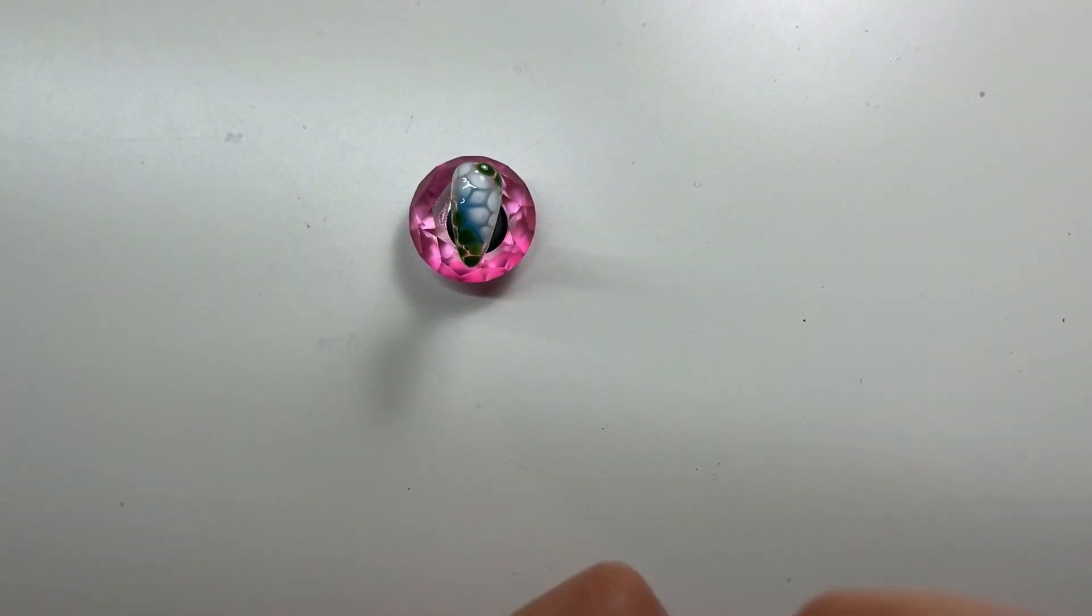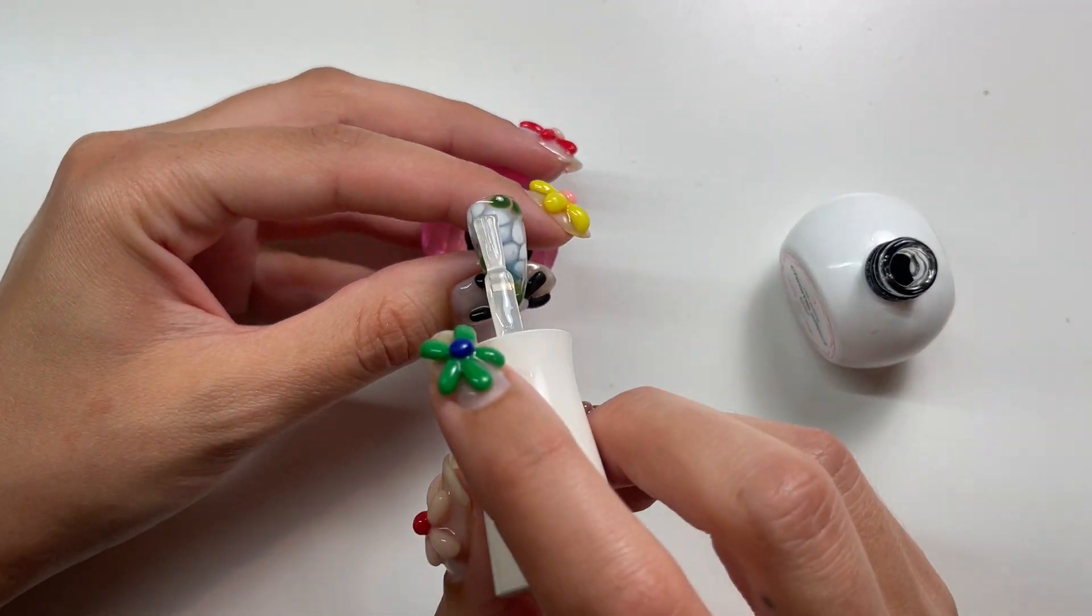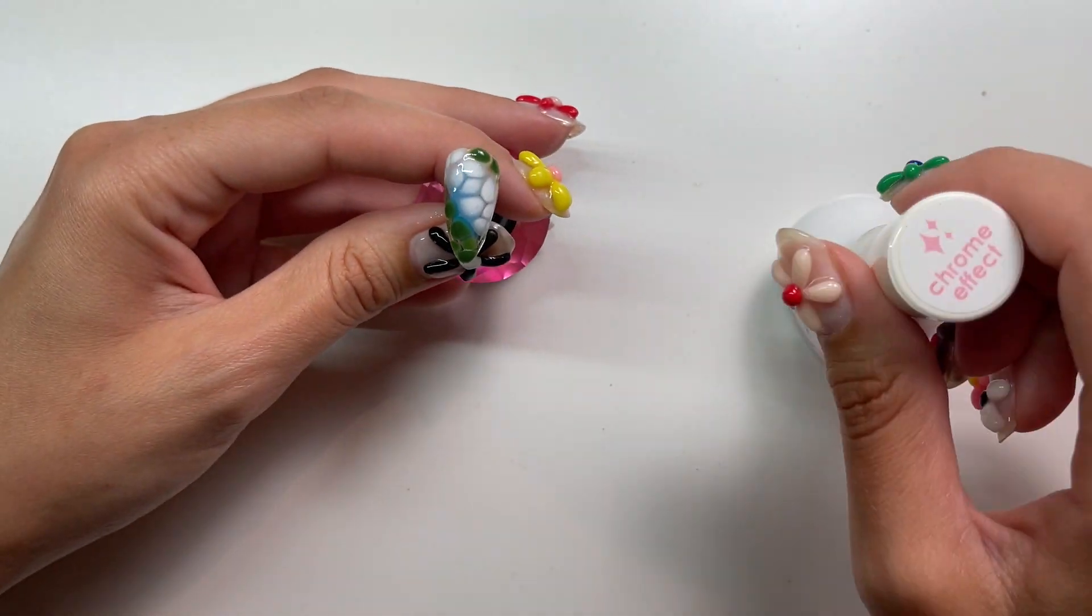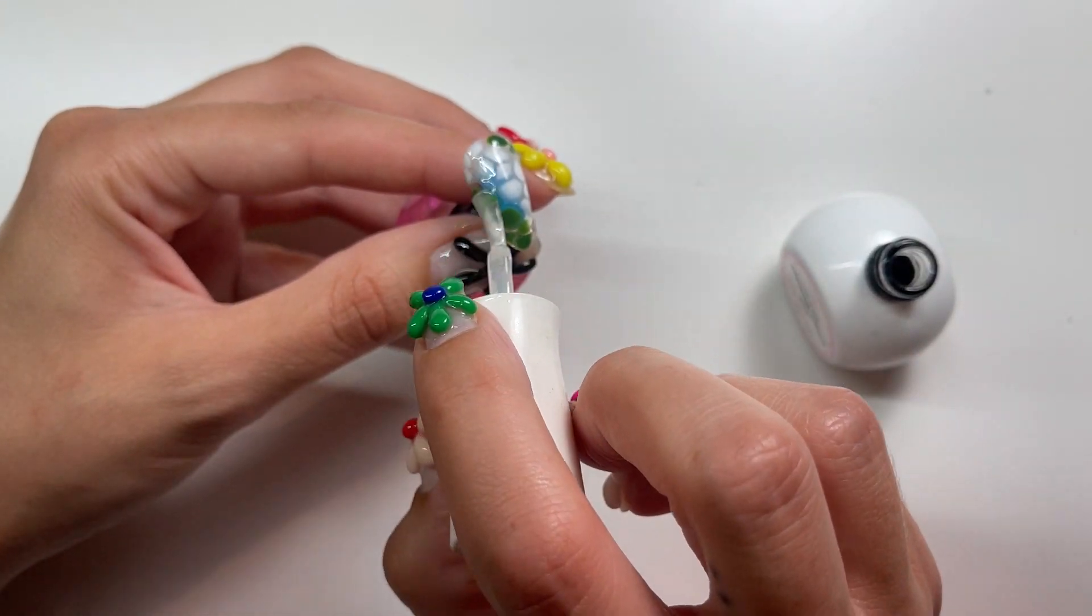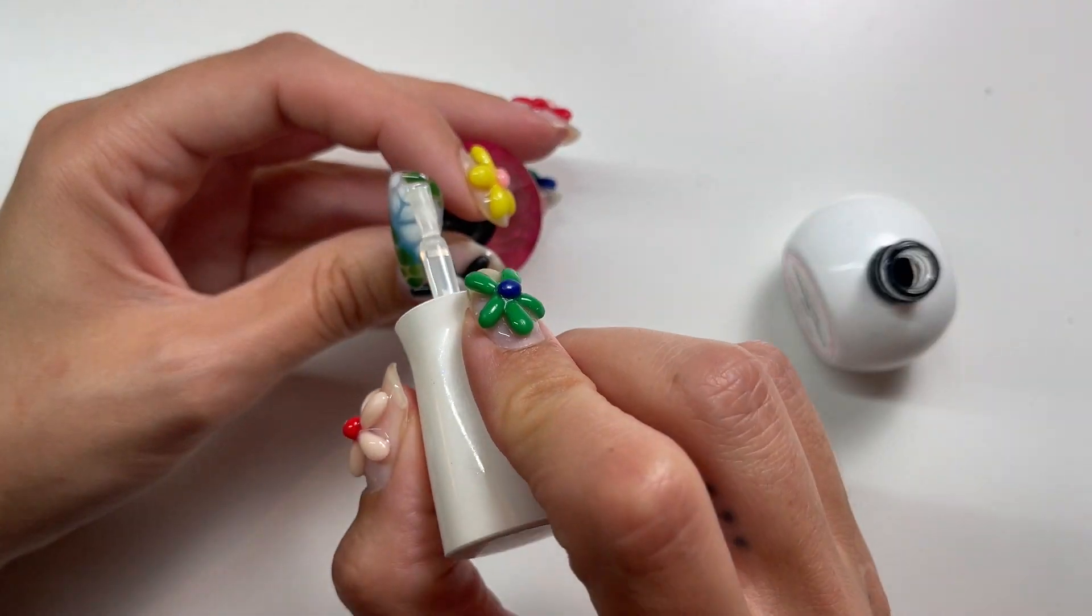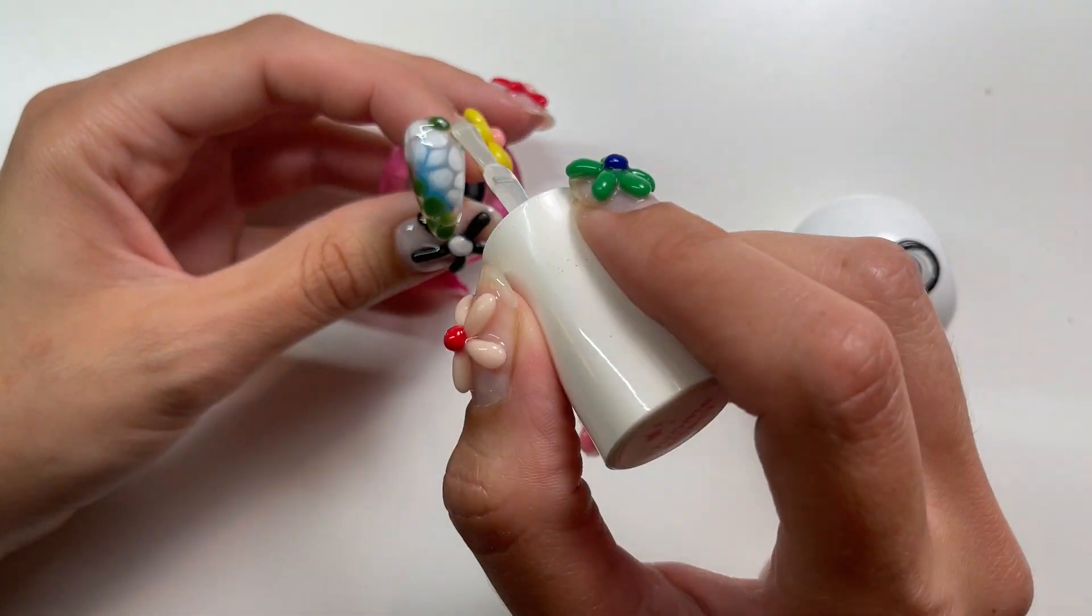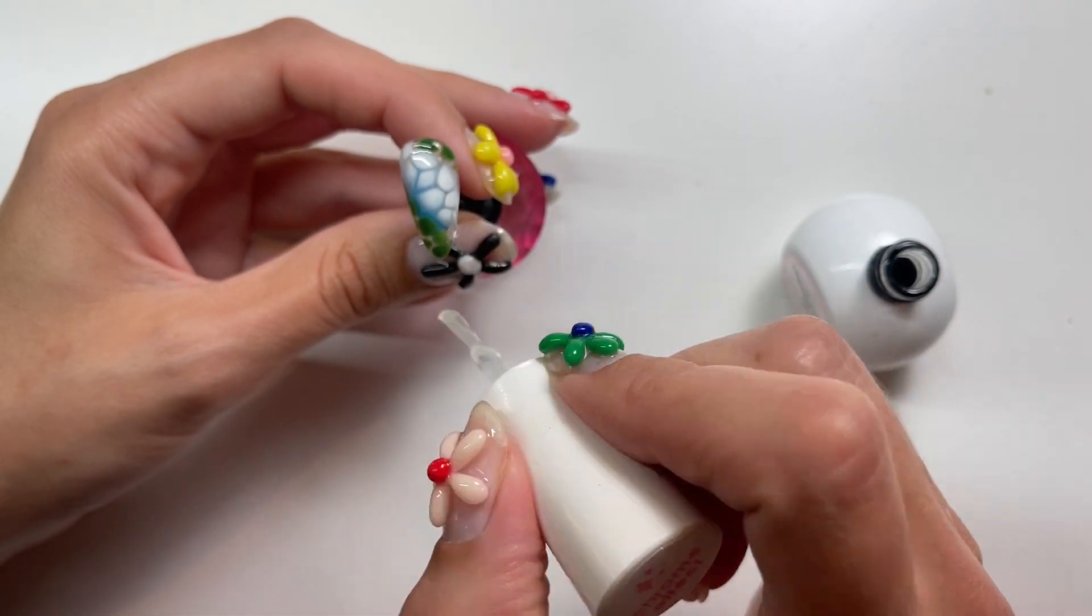And then we're going in with the Daily Charm Chrome Gel, which is the chrome gel I've been using the most as of late. I'm applying a thin layer of that and then I'm going to cure that for 60 seconds before applying the blue chrome which I'm going to pop on afterwards.